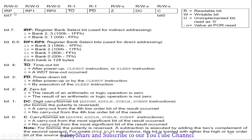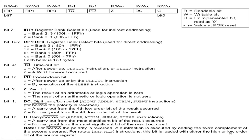Finally, we have the IRP bit, which is used for indirect addressing mode. When this bit is 0, banks 0 and 1 will be selected. When this bit is 1, banks 2 and 3 will be selected. This is the format of the status register, which has different flags related to different operations. This concludes the addressing modes present in PIC16F877. In the next video, we will see the internal peripherals available in PIC16F877 microcontroller. For more information, you can log on to the website given in the description of this video. Thank you.